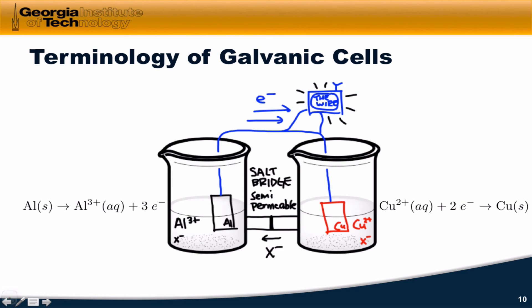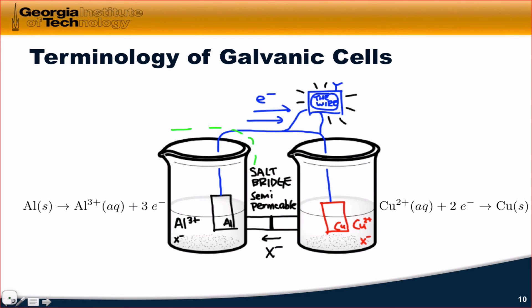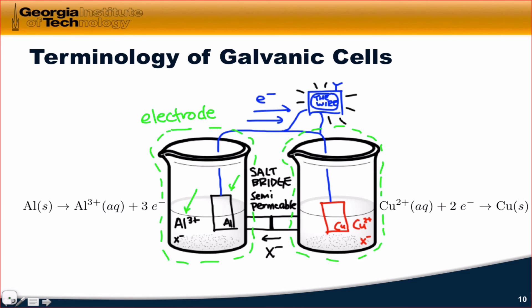Let's talk about the terminology of galvanic cells. The central salt bridge is a critical element — it allows ions to flow back and forth, ensuring charge balance. Every galvanic cell involves two of these beaker-like setups: a piece of metal (the reduced version of one component) along with the oxidized version in aqueous solution. This entire setup is what's known as an electrode. We have another electrode on the other side, consisting of reduced copper metal and oxidized Cu²⁺ in physical contact in solution. From each electrode, we have a wire and part of the salt bridge.